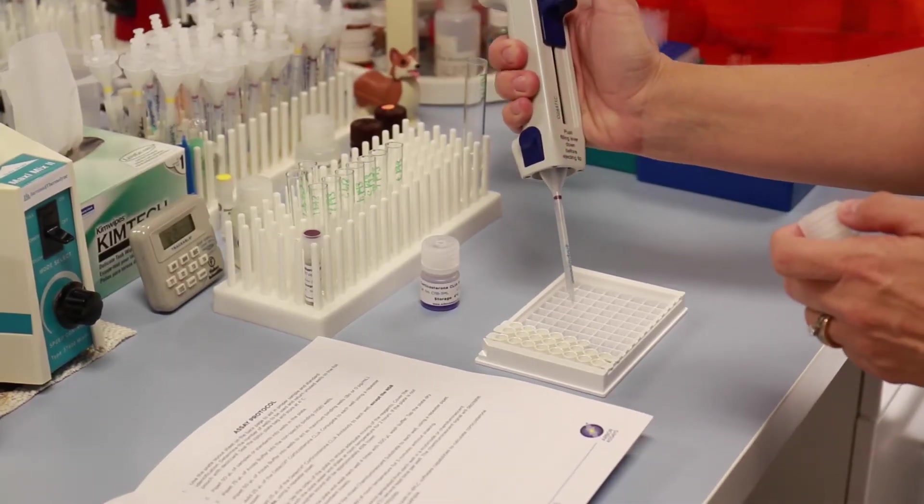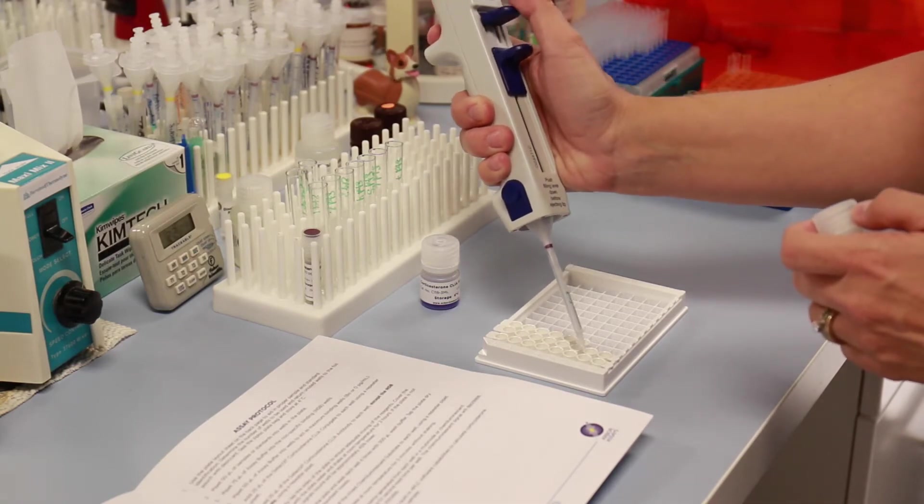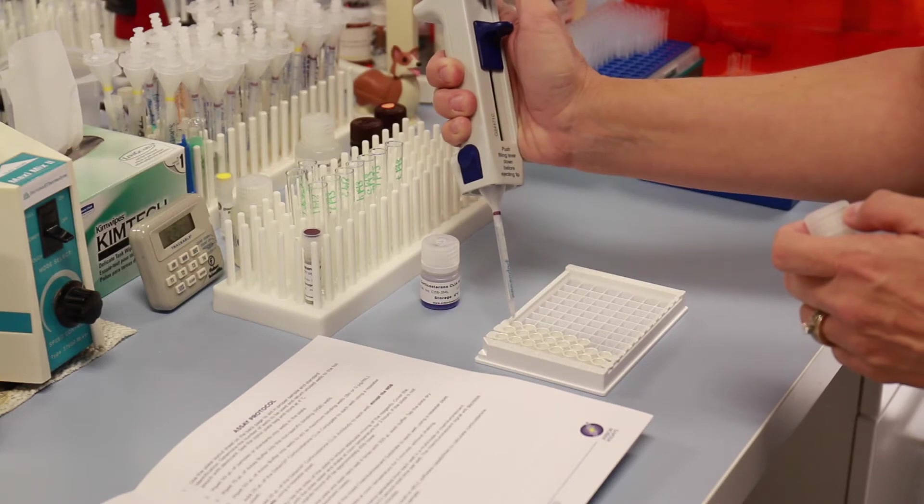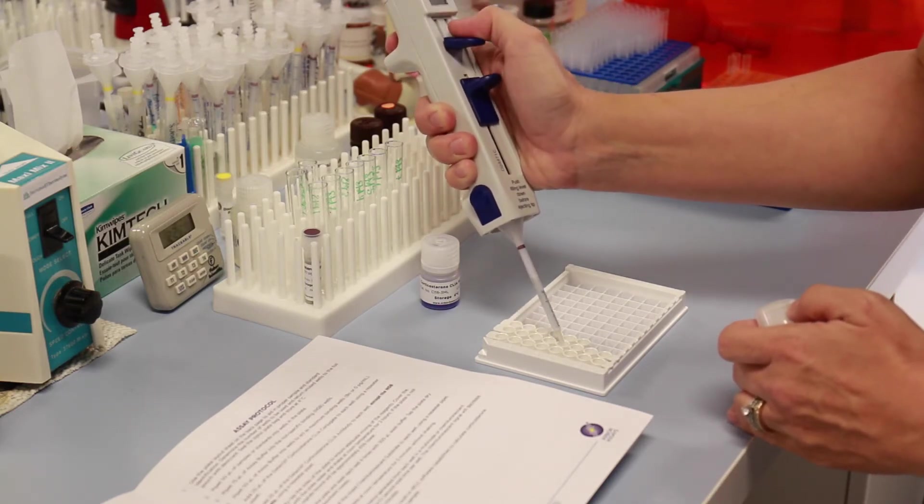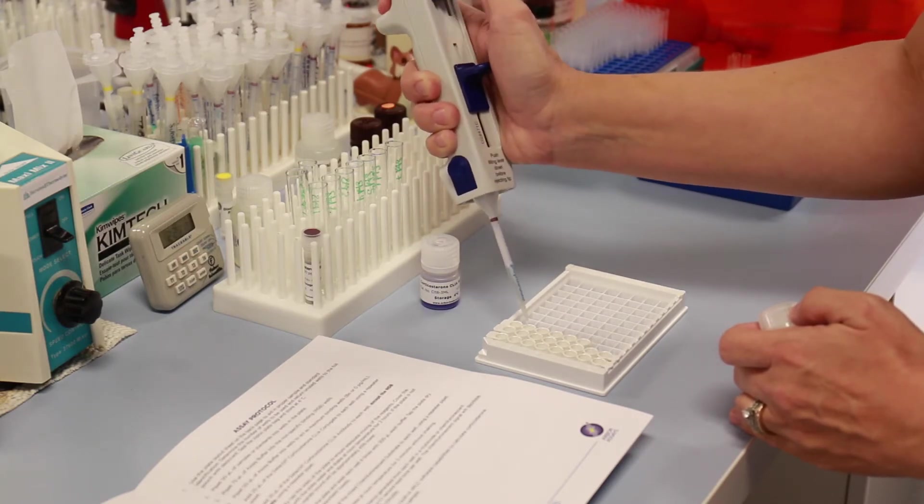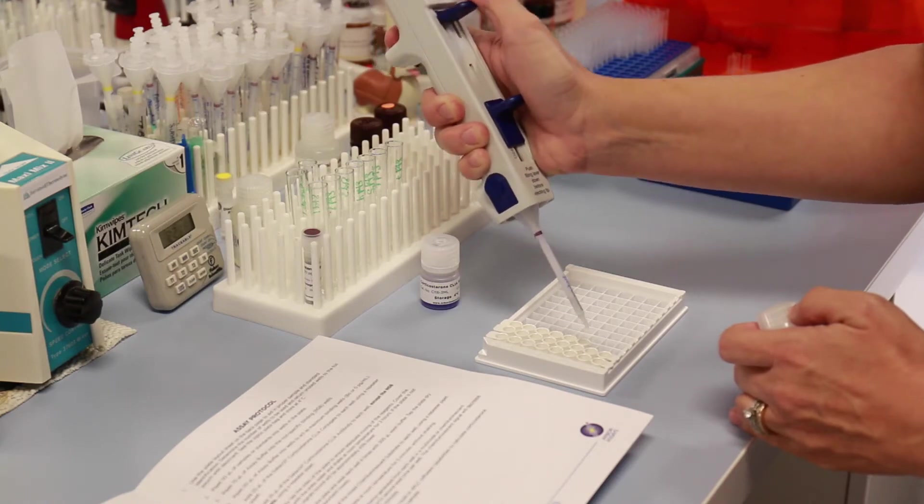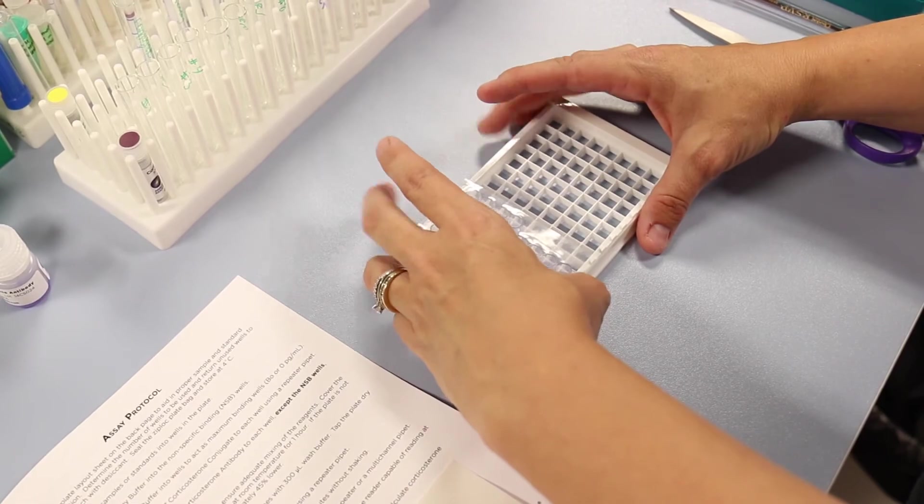To add the assay specific reagents, the conjugate and the antibody, use a repeater pipette. Use a clean repeater pipette tip for each assay specific reagent. Add the assay specific reagents and ensure that you do not splash during that addition. Tap the side of the plate to gently mix.